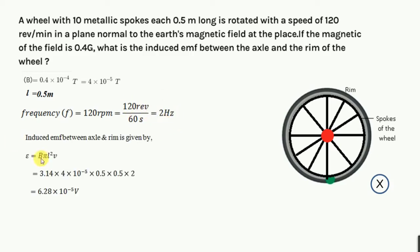So now we can easily find other things. EMF is B pi L square V - this is the expression which we have derived in our previous question. So now if you put the value, you will get the value of EMF.